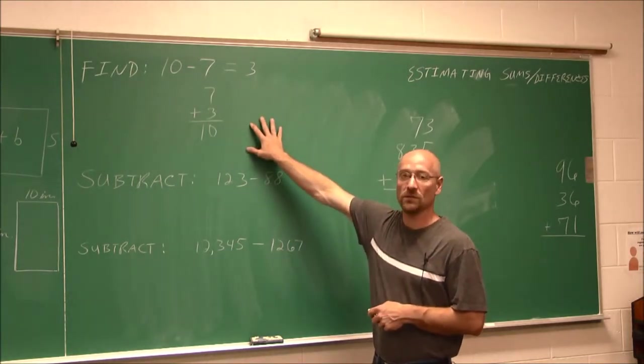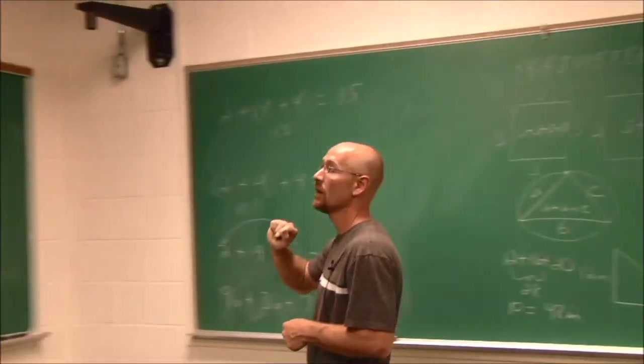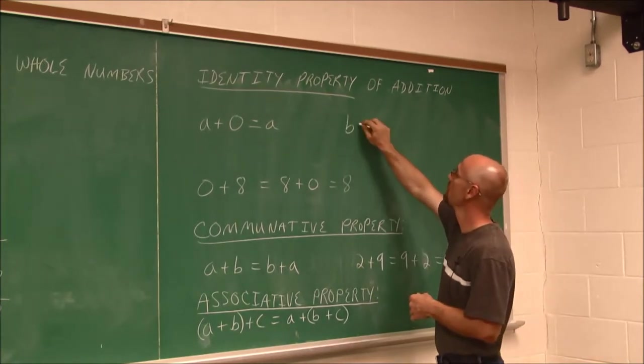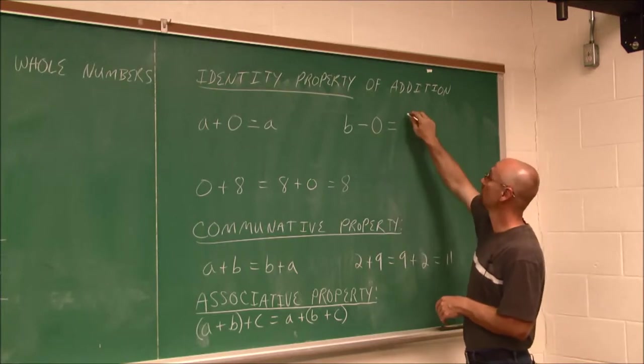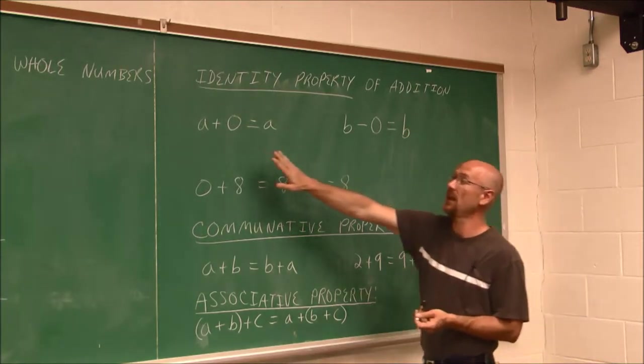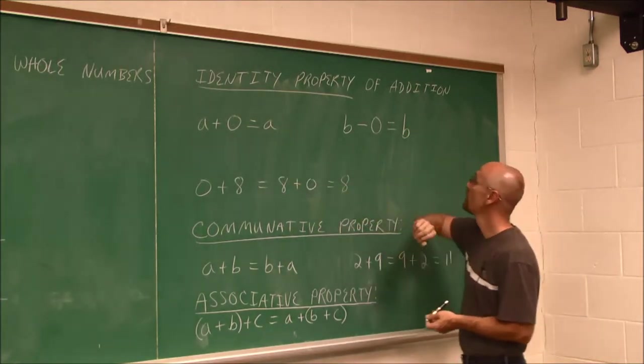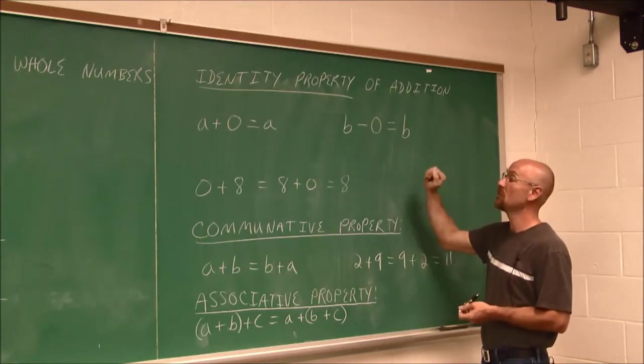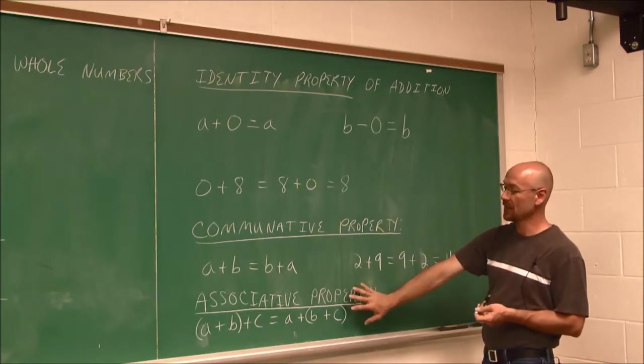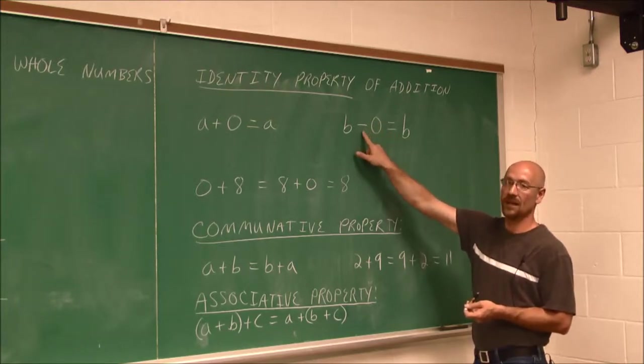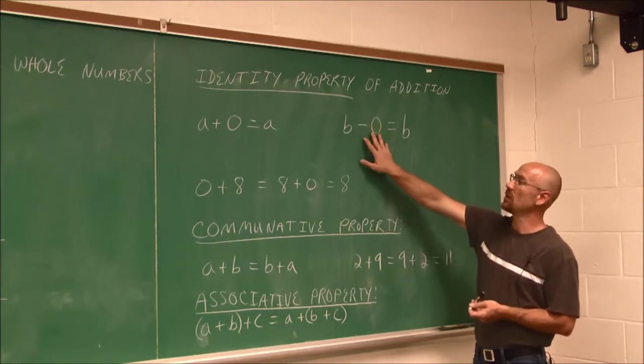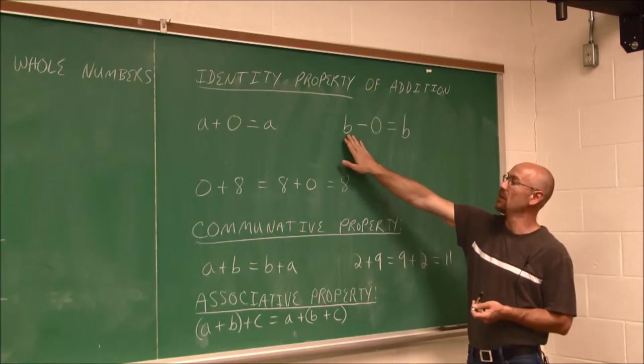One thing about subtraction, and I'm going to return to the board here from the previous video, is the identity property. This also applies, let's say we have some value b and we're subtracting 0. Now if we subtract 0, we still have b. Any number minus 0 is b, just like any number plus 0 is that number. Now, one thing we have to be careful about, and we'll get into this when we talk about integers, is order matters here. It's not like the commutative property. It's not like the associative property. Because if we switch their order but not this sign, it's something different. But the identity property also applies to subtraction if we have a number minus 0.